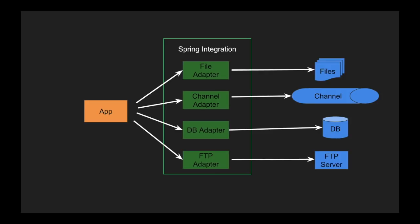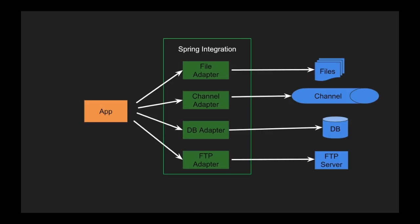Spring Integration gives us different adapters which can be integrated into a Spring-based application. It suits Spring Boot well because Spring Boot comes with its own embedded Tomcat, and with Spring Integration you can easily create event-driven and message-centric architectures. In this video, we'll use a file adapter — we'll read files from a particular directory, do some transformation on the content, and then push that to a different folder.